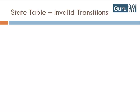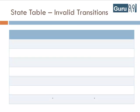The state graph is useful for identifying valid transitions. But if you want to determine invalid transitions, you can use a state table.